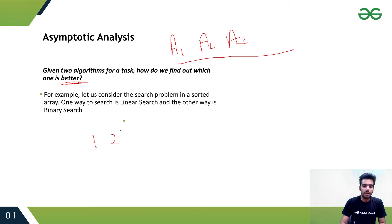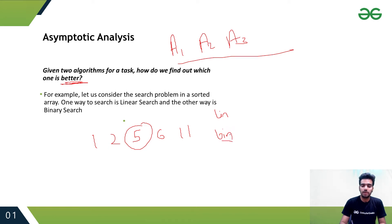For example, consider a sorted array of integers: 1, 2, 5, 6, 11. We want to search for 5 in this array. We have two algorithms: linear search and binary search. Since the array is sorted, we can use binary search. Linear search will search elements one by one, giving O(n) time complexity in the worst case.